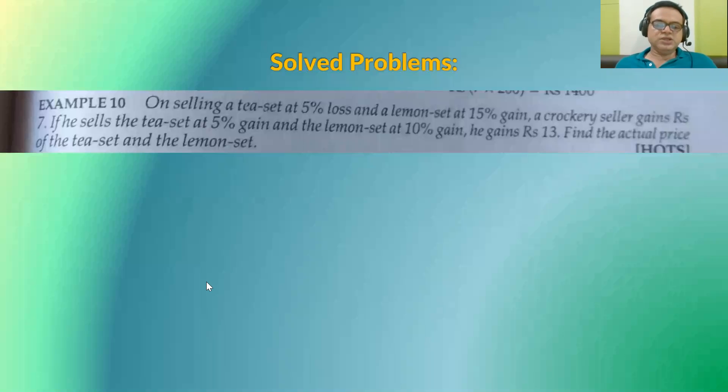The question is, on selling a tea set at 5% loss and a lemon set at 15% gain, a crockery seller gains Rs. 7. If he sells the tea set at 5% gain and lemon set at 10% gain, then in this case he gains Rs. 13. Find the actual price. Actual price means selling price.